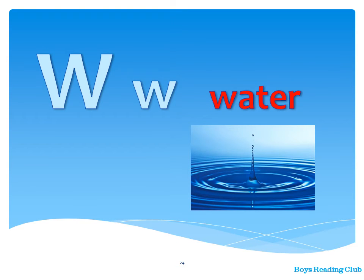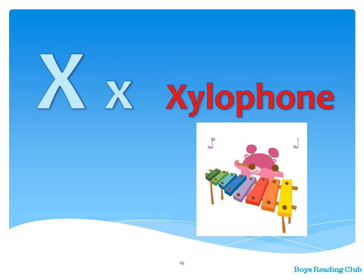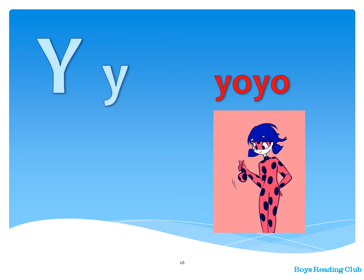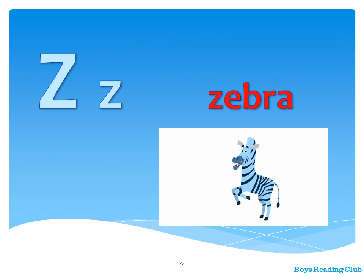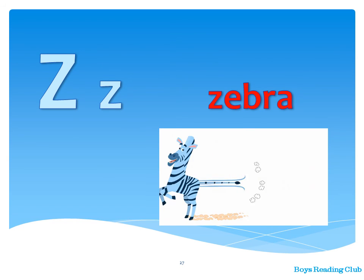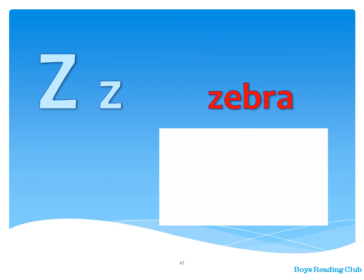V — Violet. W — Water. X — Xylophone. Y — Yo-Yo. Z — Zebra.